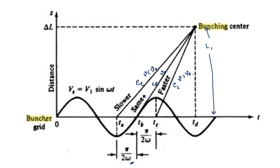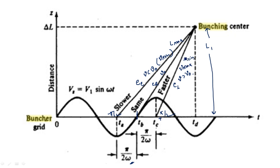L_max is associated with the early electron case. When the early electron has minimum velocity compared to the reference electron, it needs to travel more distance to arrive at the same time. The late electron travels with maximum velocity and covers less distance. So the distance associated with the early electron is maximum and the distance for the late electron is minimum.